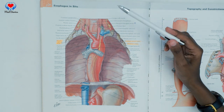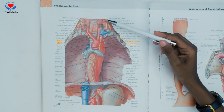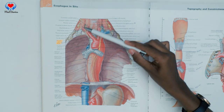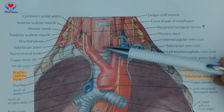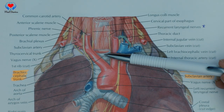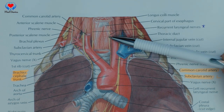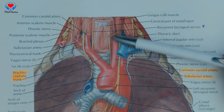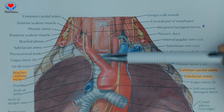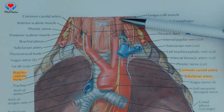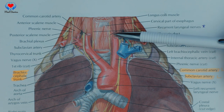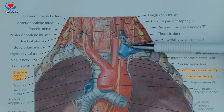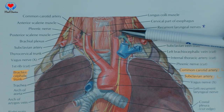Now let's learn about the relations of the esophagus, starting with the cervical part. Anteriorly, the trachea and the right and left recurrent laryngeal nerves are here. Posteriorly, you can see the longus colli muscles and the vertebral column. On both sides it has the lobes of the thyroid gland, and on the left side you can find the thoracic duct.